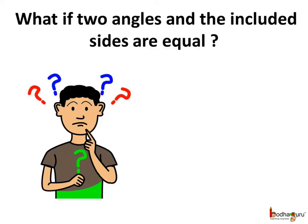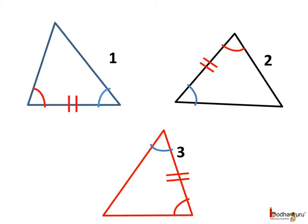You may wonder: what if two angles and the included side are equal in two given triangles? Here we have three triangles where the two angles are equal and the side included by the two angles is also equal. The angles marked by the blue arc are equal, the angles marked by the red arc are equal, and the marked sides are equal in all three triangles.